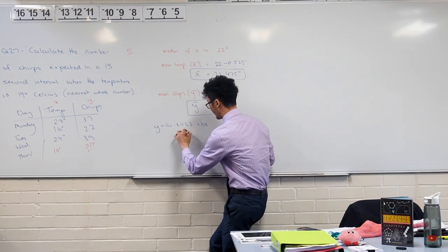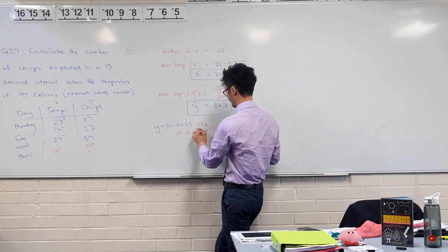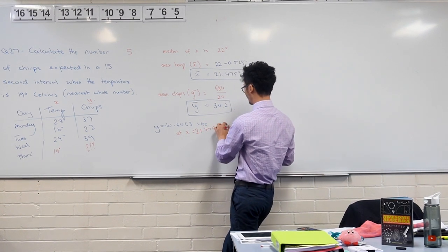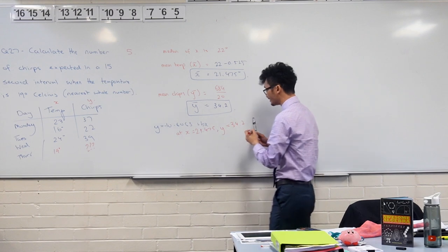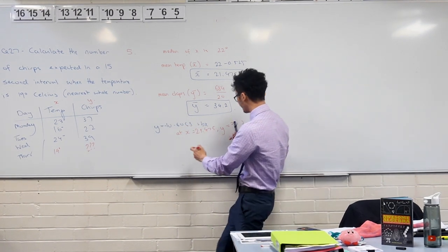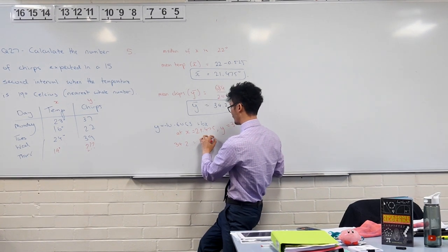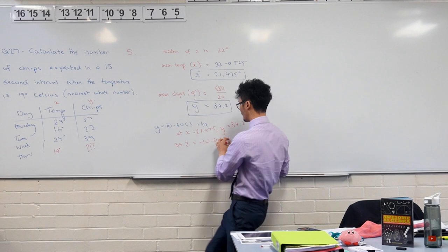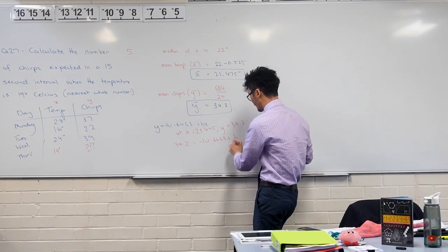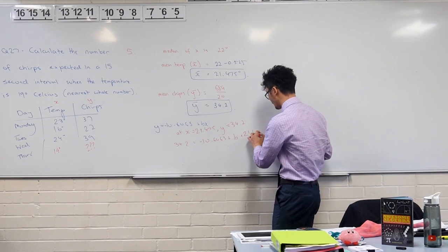I have these points that I can substitute in to evaluate what b is equal to. So I can say, at x is equal to 21.475, at y equals to 34.2. What that means is I know that this is a point on the line. So I can substitute it in and replace these values here. So I get 34.2 plus b multiplied by this value here, 21.475.